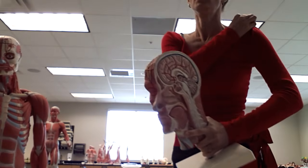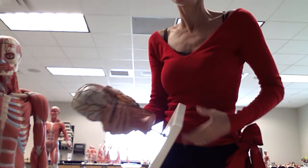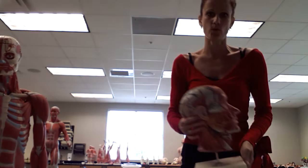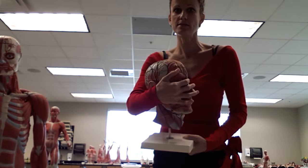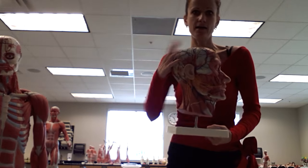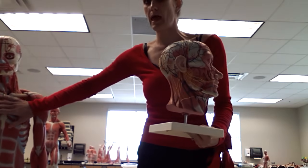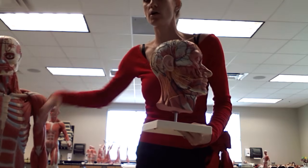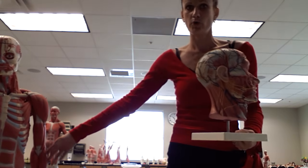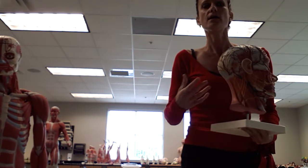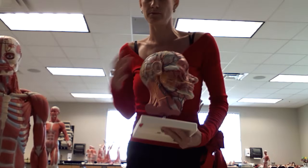Welcome to the first video in the muscle series for the Anatomy and Physiology 1 course. Today we'll go over the muscles of the face, head, and neck region, as well as the muscles of the anterior trunk, posterior trunk, and the upper extremity. The second video in the series will cover the muscles of the legs.